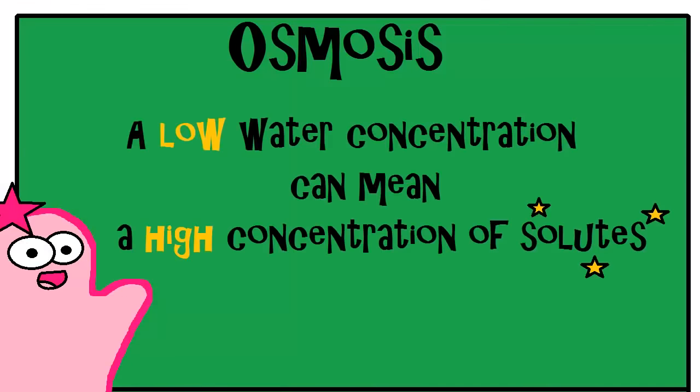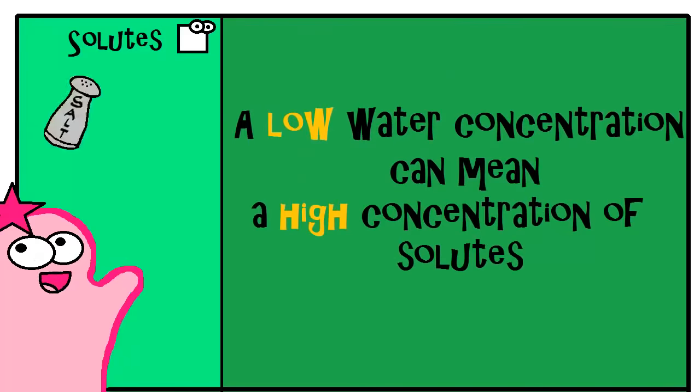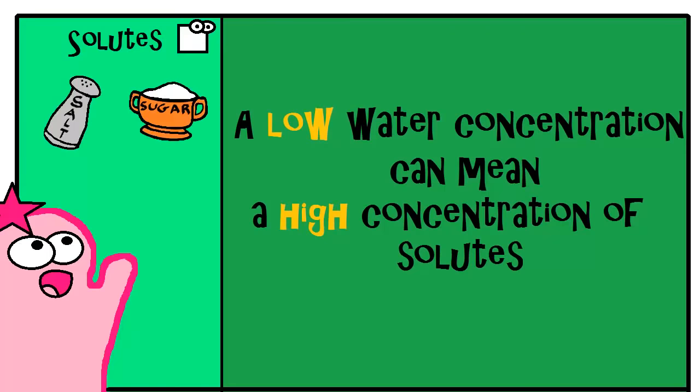But there's another way to think about water movement in osmosis. A low water concentration likely means there are a lot of solutes. Solutes are substances like salt or sugar that can be dissolved within a solvent, like water.